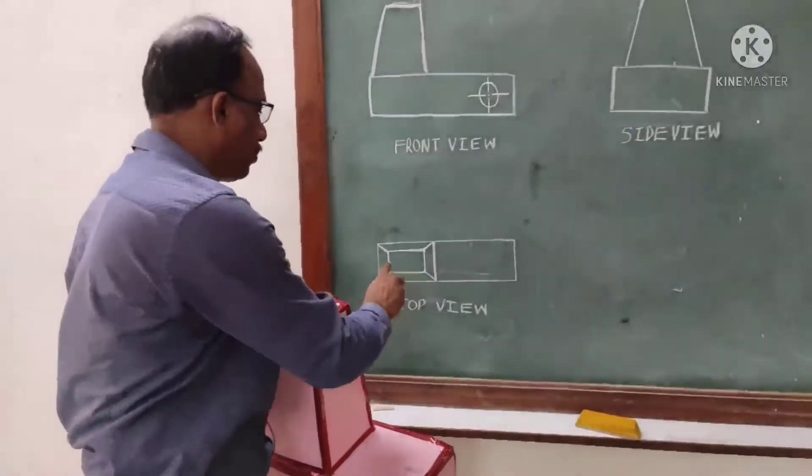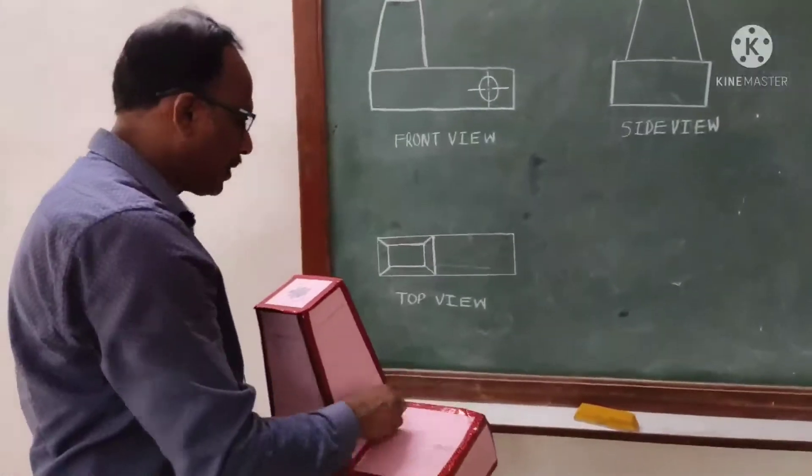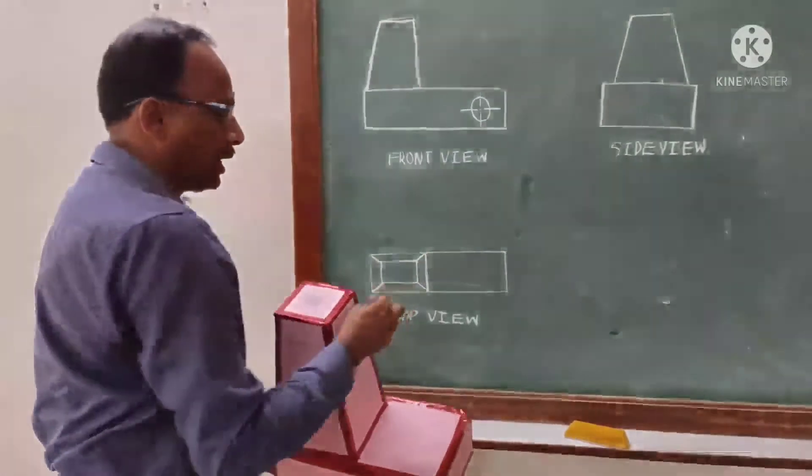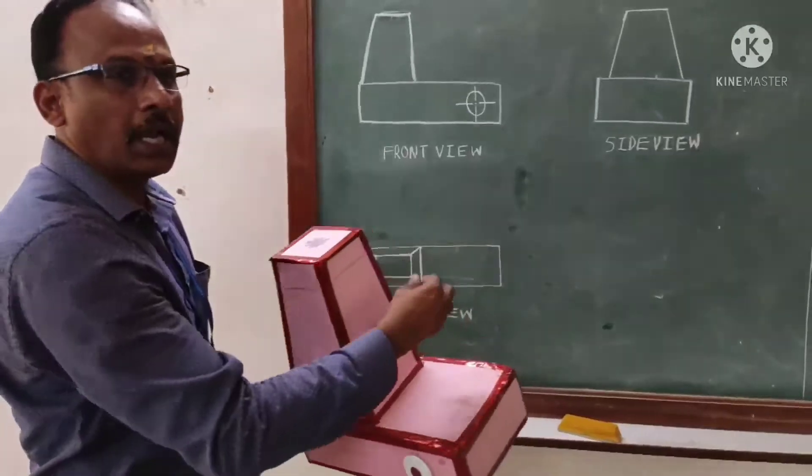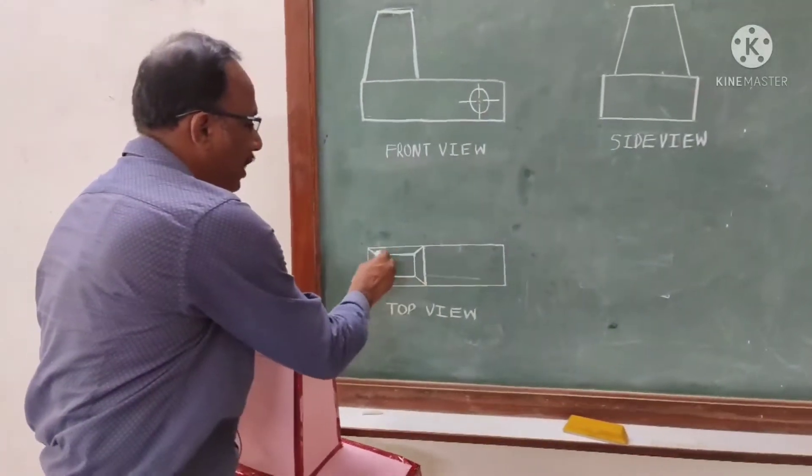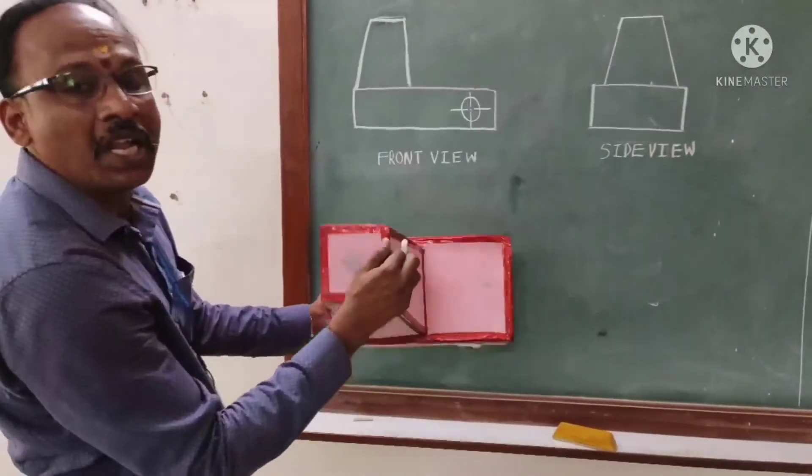The top surface will be seen as one square. Then the bottom one will be seen like this. Then these slant edges, we will draw like this. This is your top view.